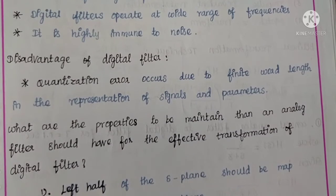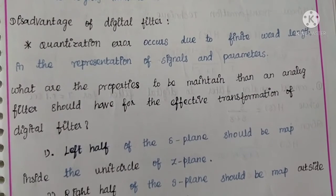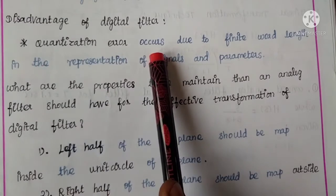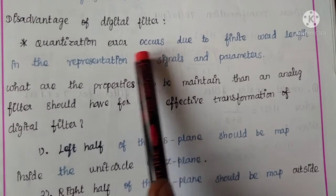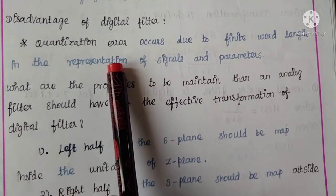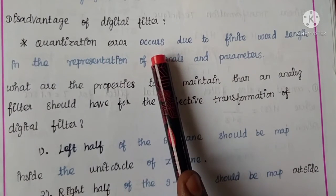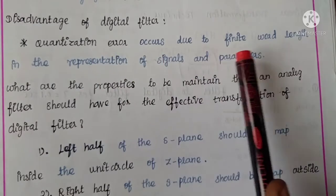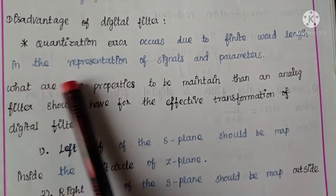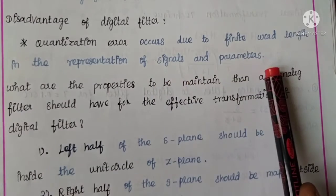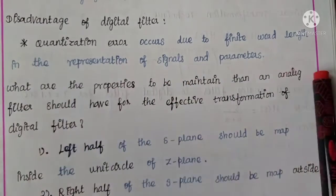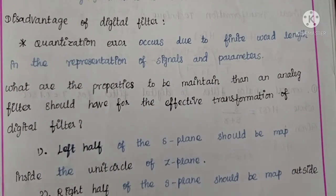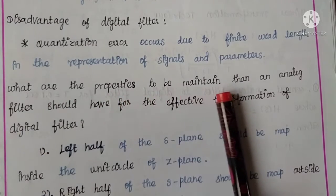Even though digital filter has many advantages, it has some disadvantages too. The first disadvantage is quantization error. Quantization is done by the process of rounding and truncation, which causes errors. Quantization error occurs due to finite word length in the representation of signals and parameters. This is the disadvantage of digital filter.